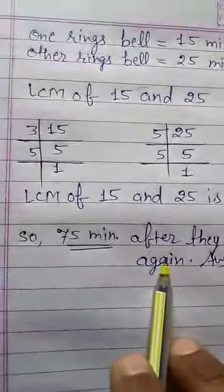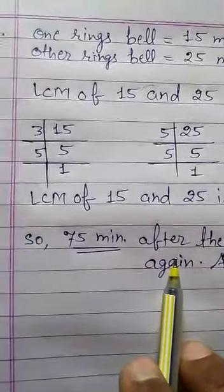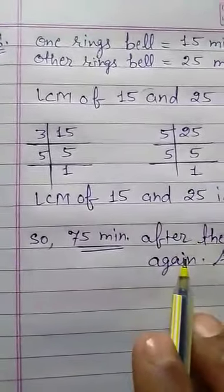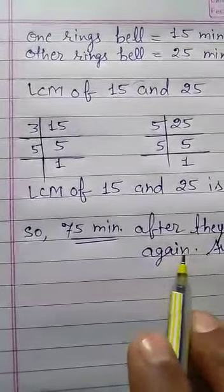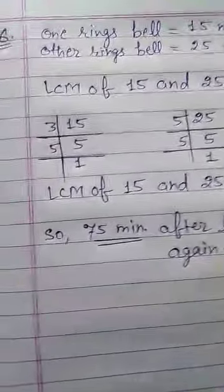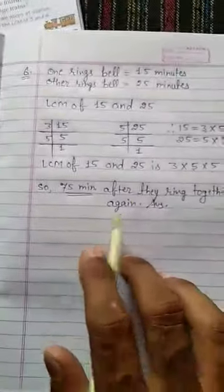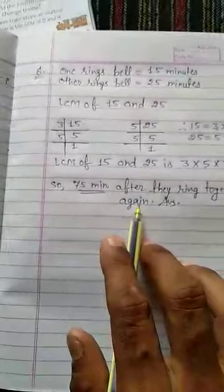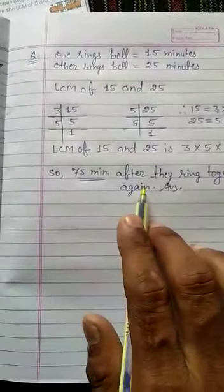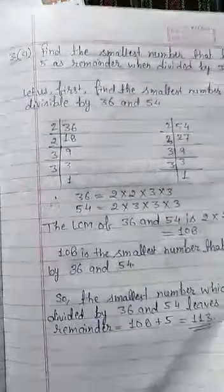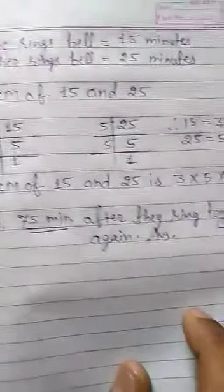Exercise 6E has been completed and the chapter is also completed. You will do this exercise in your register neatly and cleanly, and you will revise all the chapters. Thank you.